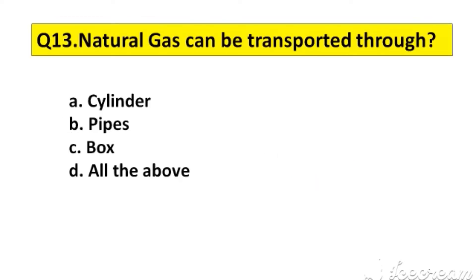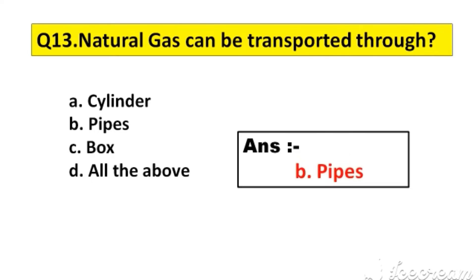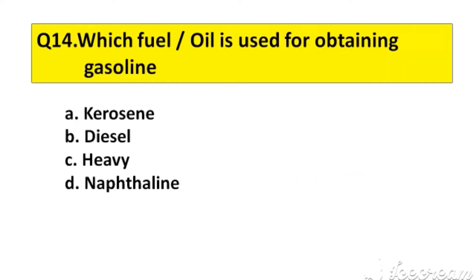Question number 13. Natural gas can be transported through option A: Cylinder, B: Pipes, C: Box, D: All the above. The right answer is option B: Pipes.